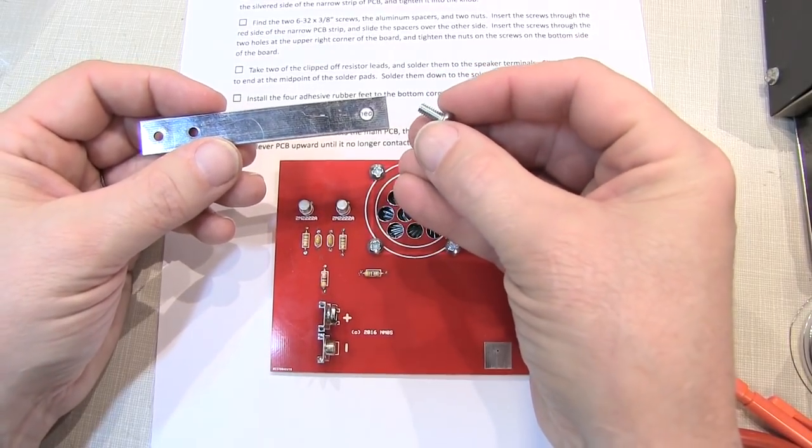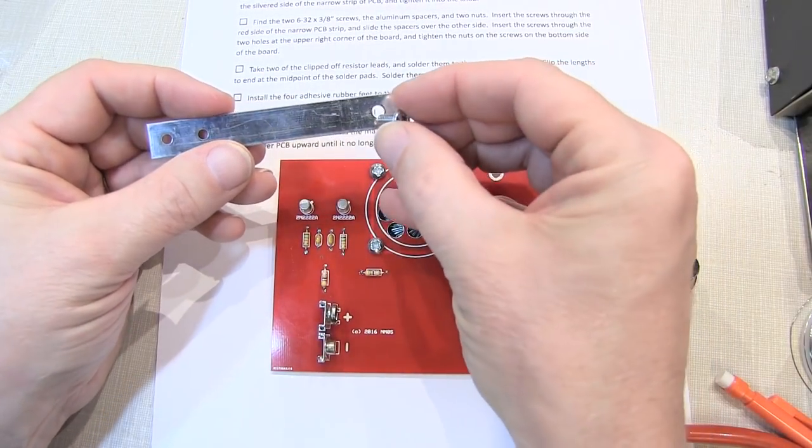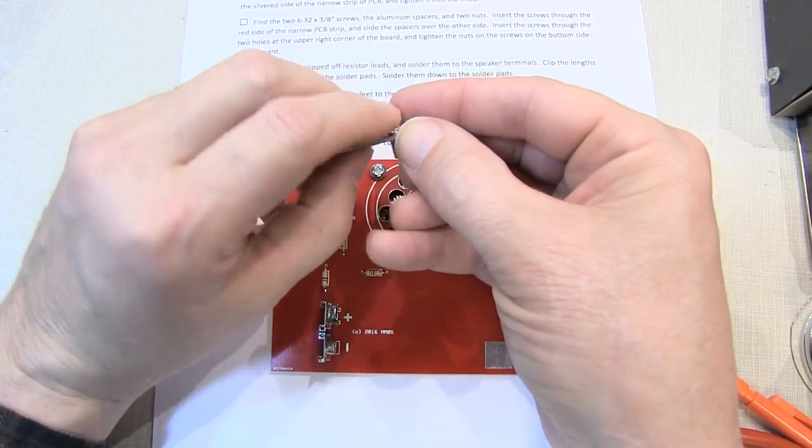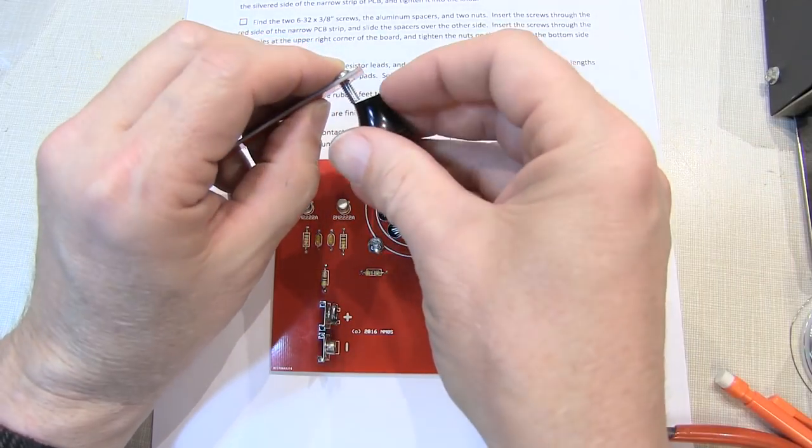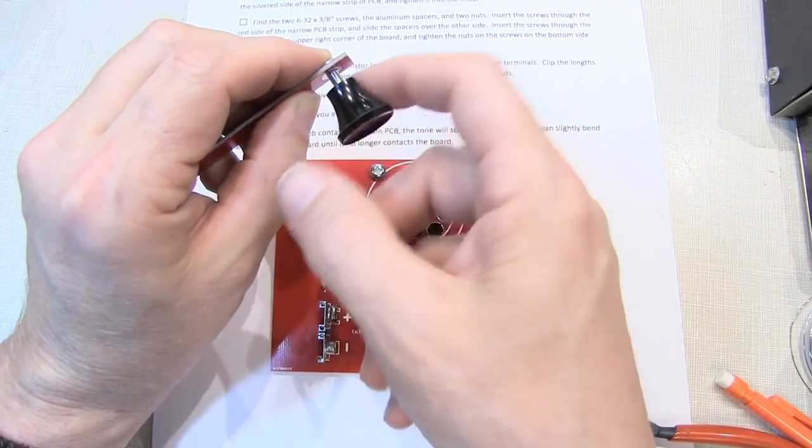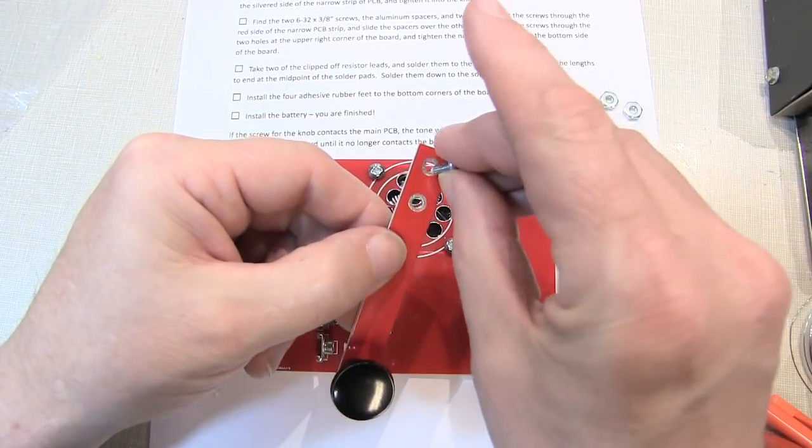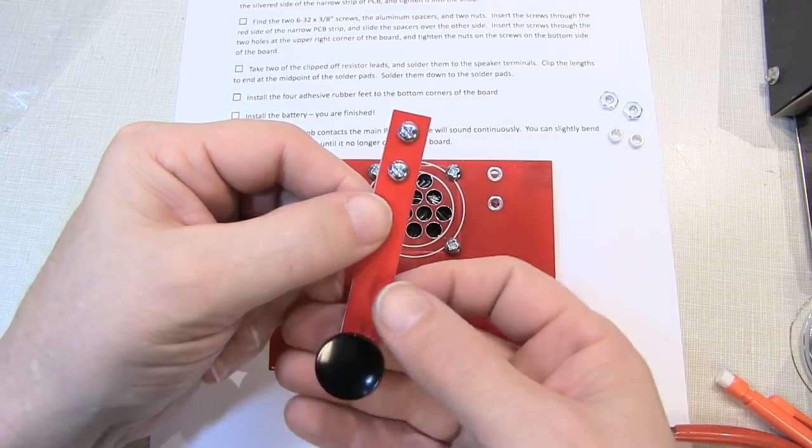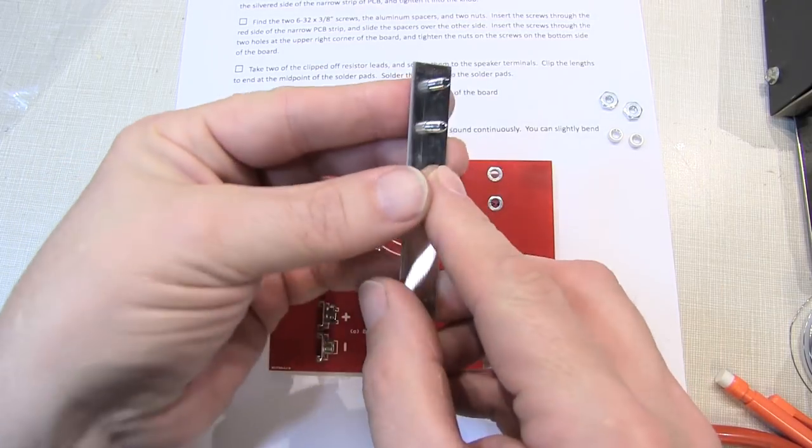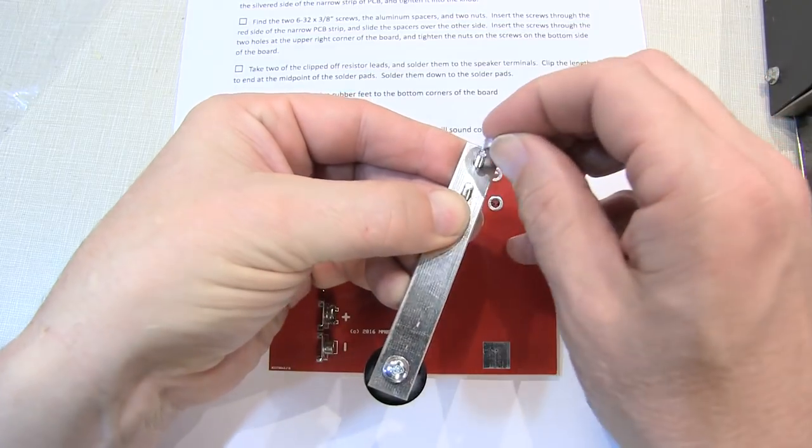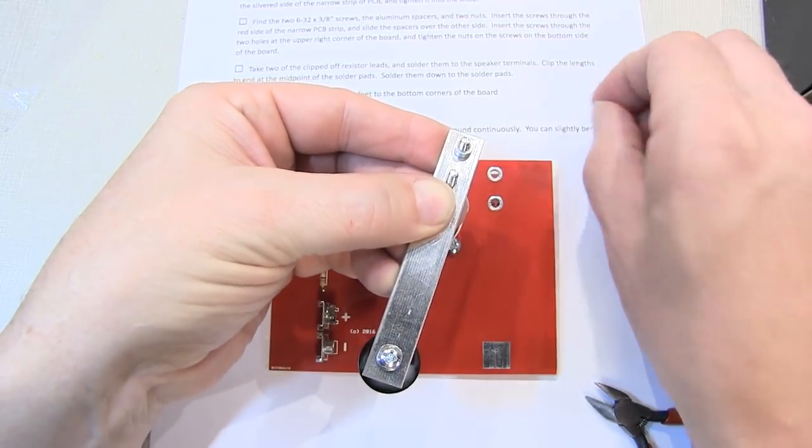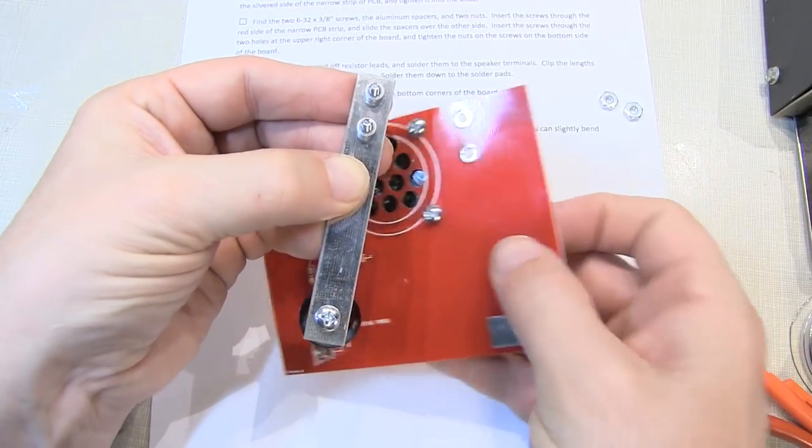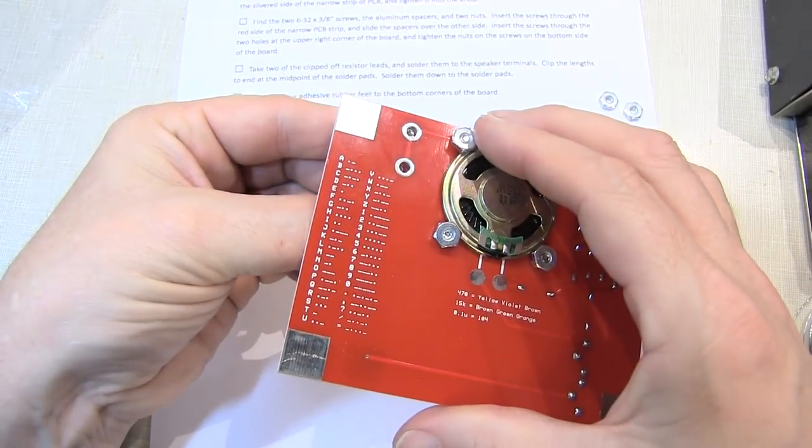Next take the 8-32 by 3/8 inch screw stick it through the large hole at the end of this board with the silver side up. Turn it over and attach the plastic knob. I'll take the last two screws and insert them through the end of the keyboard here and through the red side over. Flip it over and slip the two spacers on top of those screws.